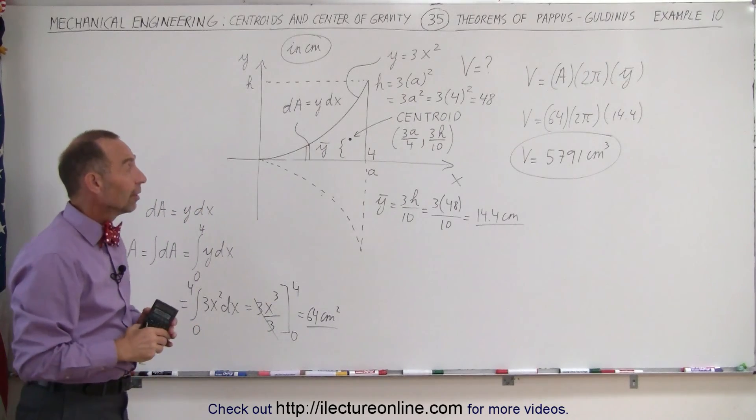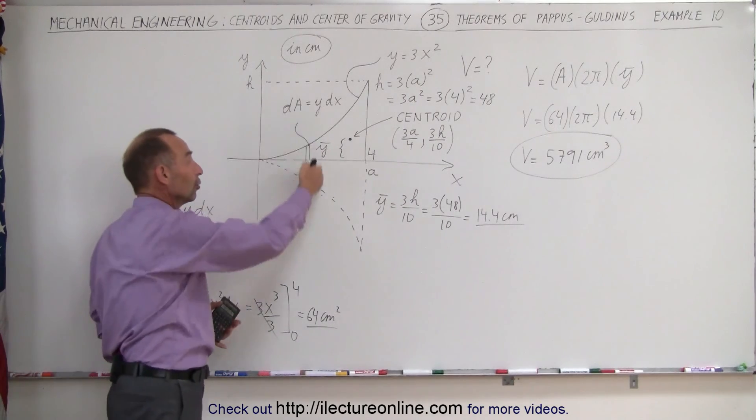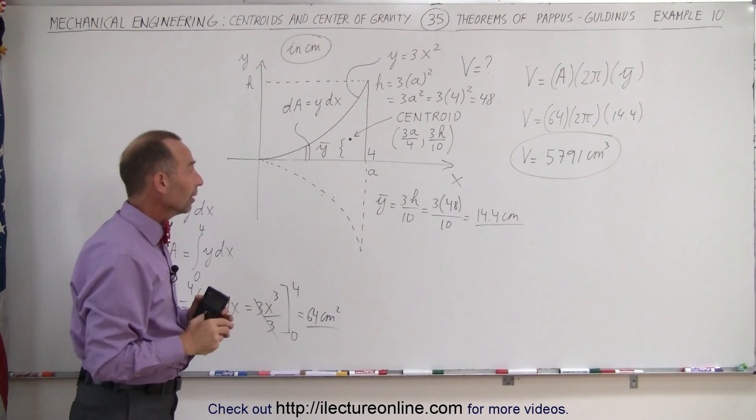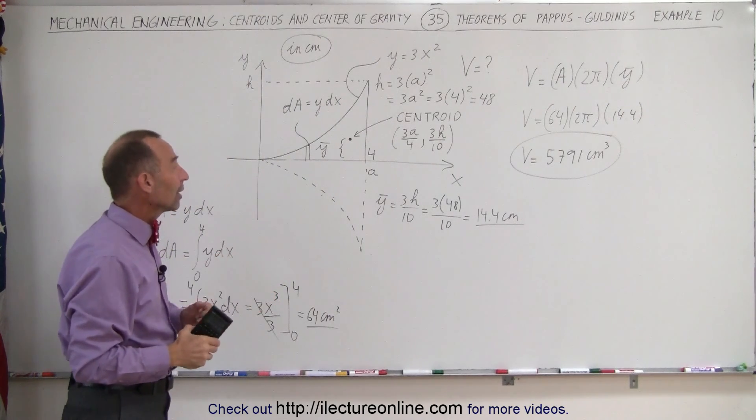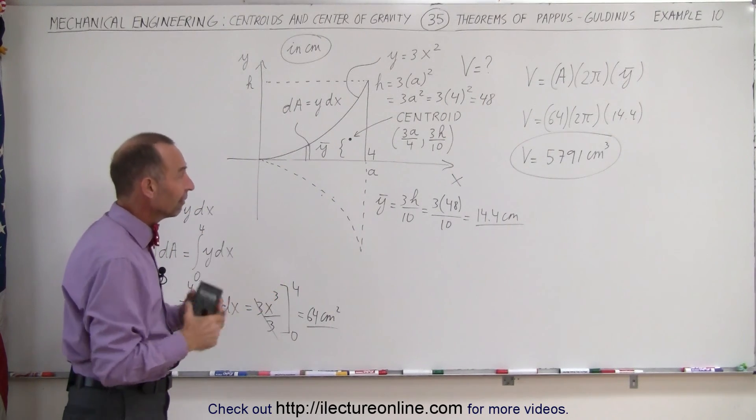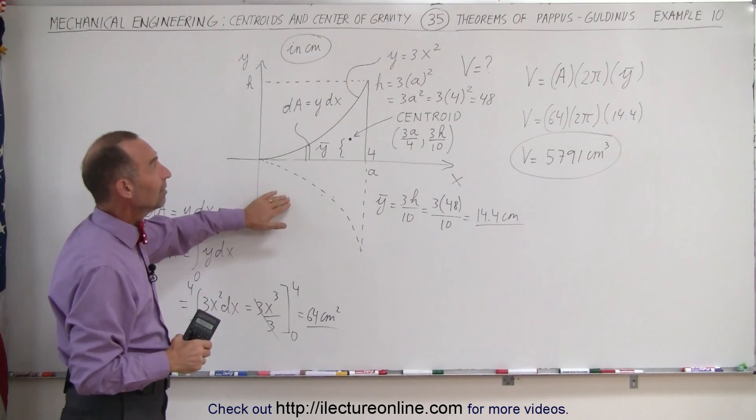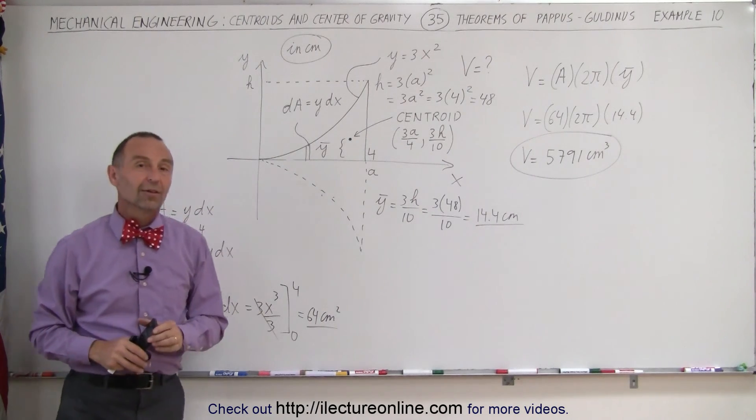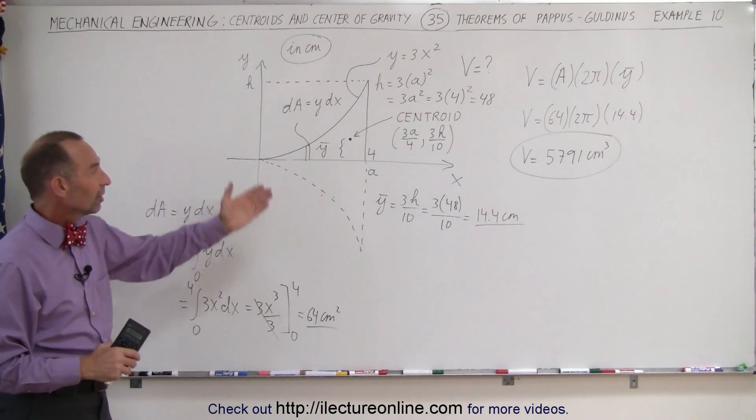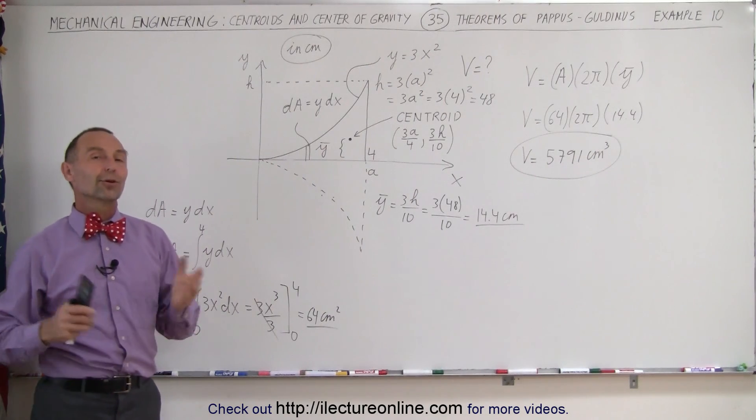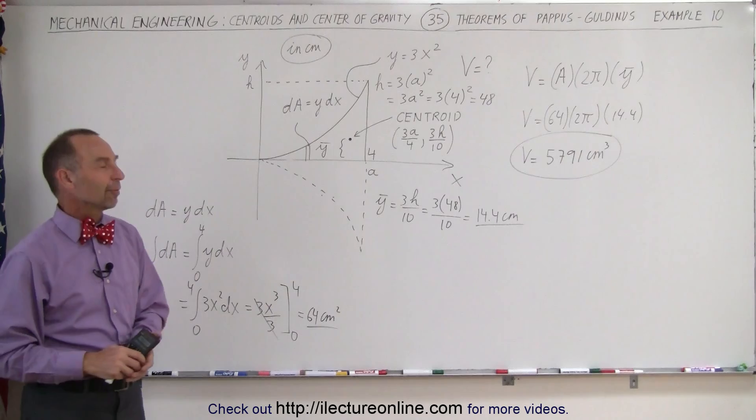Really easy. Of course, you can find this using slices. You can do integrals using multidimensional integrals in the x and the y direction, making little slices and finding it that way. But notice how easy the Pappus-Guldinus theorem is, with some simple integration and some simple calculation for the centroid, you can also find the volume of that particular object.